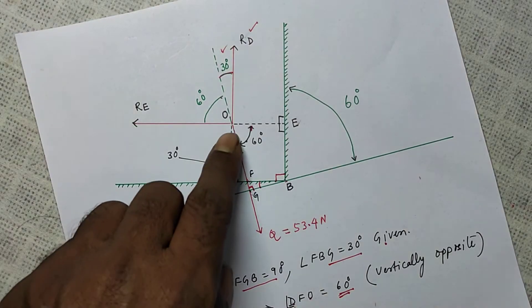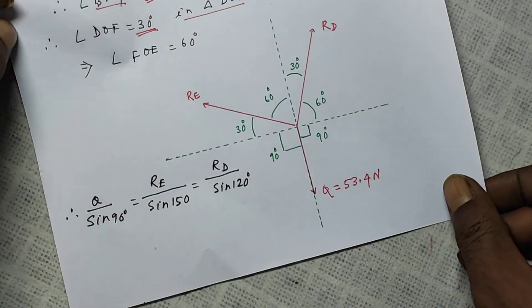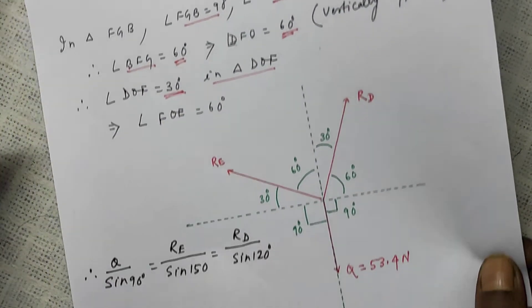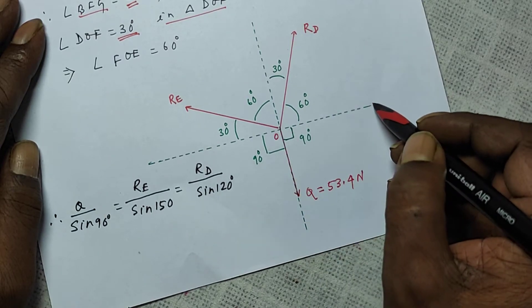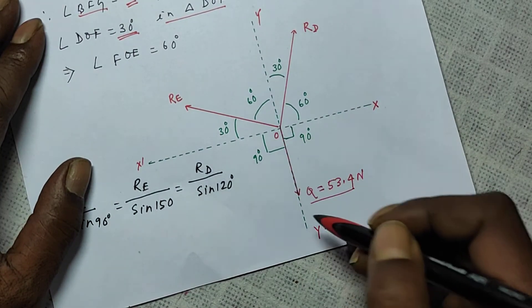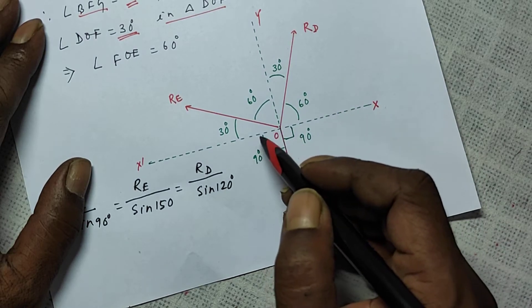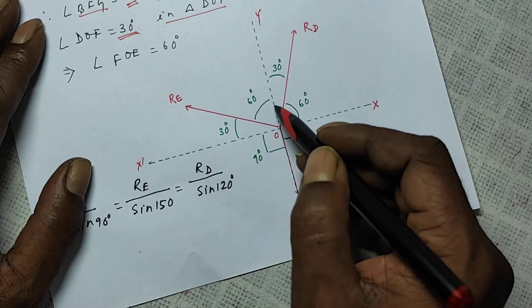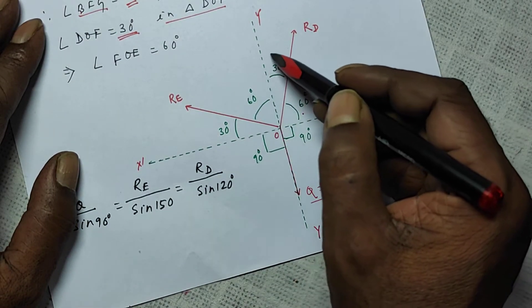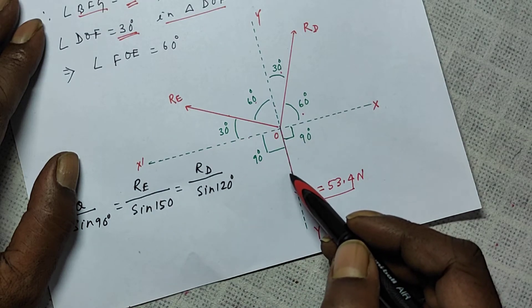Now the free body diagram at point O shows three forces: weight Q, reaction force Re, and reaction force Rd. Taking O as the origin with x and y axes, Q is vertically downward. The angle between forces is determined: this angle is 30 degrees, that angle is 60 degrees. From here to here is 90 degrees; 90 plus 30 gives 120, and 90 plus 60 gives 150 degrees.